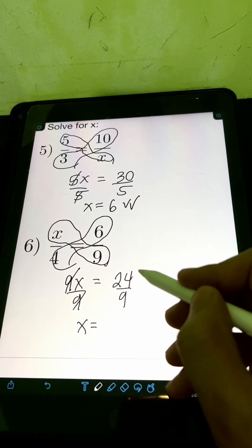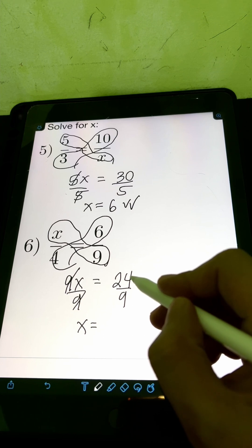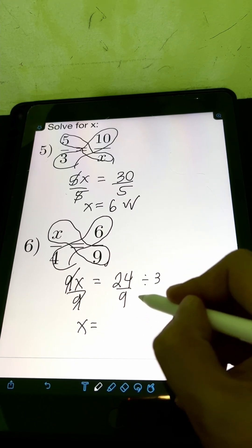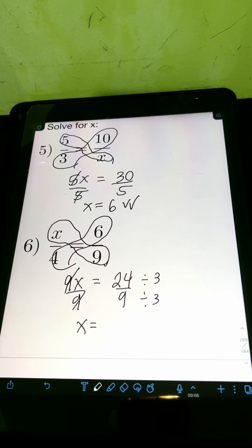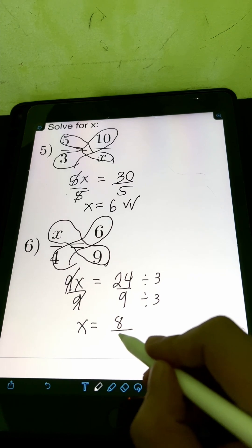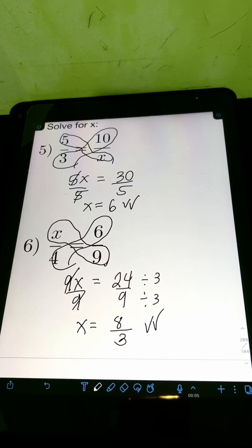Cancelling out 9, x is equal to 24 over 9 or we can transform this to lowest term. The GCF of 24 and 9 is 3. So we can divide both numerator and denominator by 3. 24 divided by 3, that's 8, over 9 divided by 3, that's 3. So the final answer is 8 over 3.